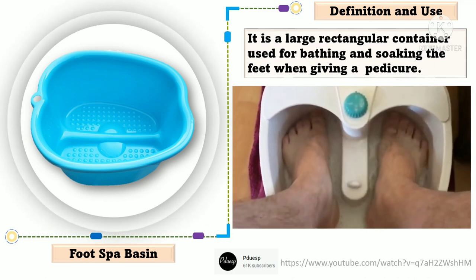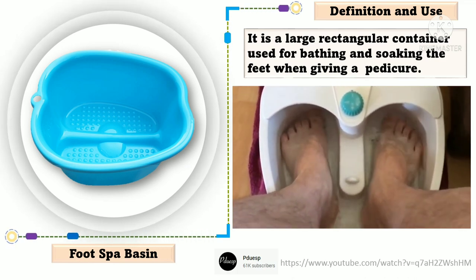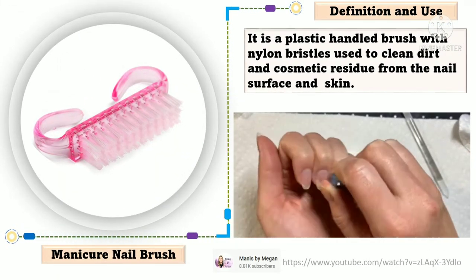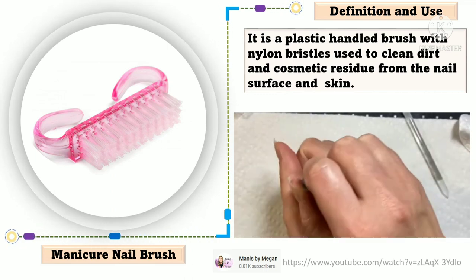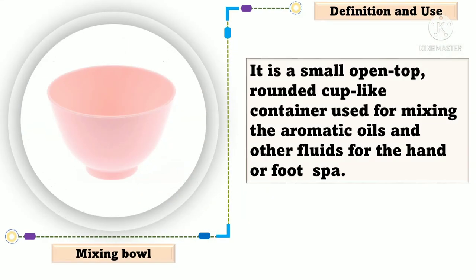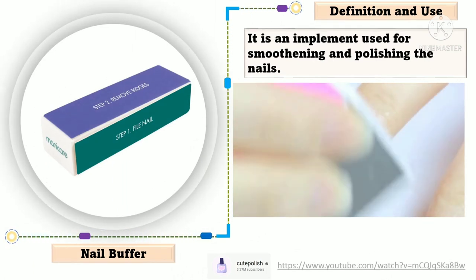Foot spa basin is a large rectangular container used for bathing and soaking the feet when giving a pedicure. Manicure tray is a flat container where all the necessary tools and implements are placed for use by the manicurist. Manicure nail brush is a plastic handheld brush with nylon bristles used to clean dirt and cosmetic residue from the nail surface and skin. Mixing bowl is a small open-top rounded cup-like container used for mixing the aromatic oils and other fluids for the hand or foot spa. Nail buffer is an implement used for smoothening and polishing the nails.